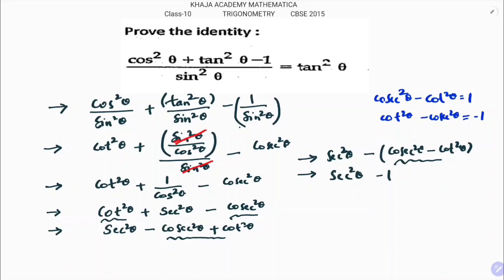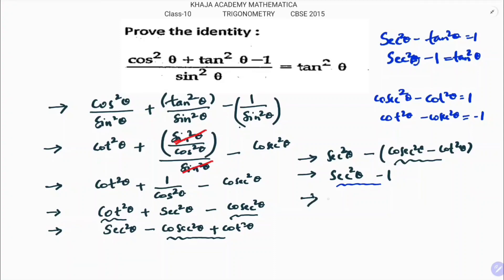Using the identity sec²θ - tan²θ = 1, we get sec²θ - 1 = tan²θ. Therefore sec²θ - 1 = tan²θ, which is the required result.